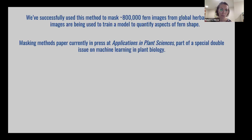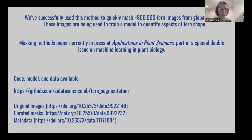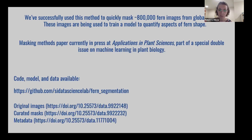Currently this paper is in press at Applications in Plant Sciences as part of a special issue on machine learning and plant biology. It should be out any day now and I'll send it along to the list when it is. The code and data are all available — code on GitHub and data on Figshare.